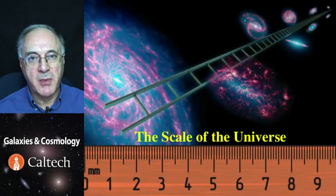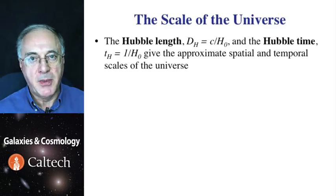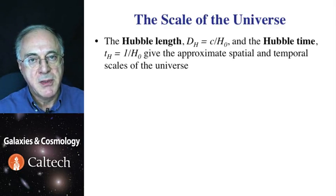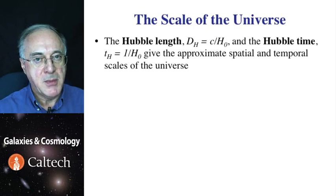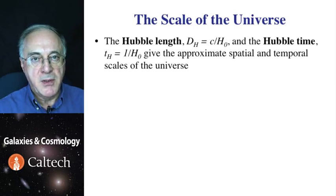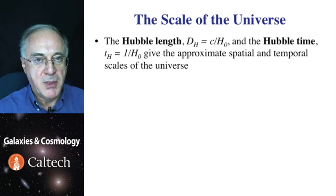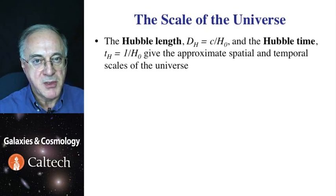We now turn to measurement of cosmological parameters, the first of which is Hubble's constant or Hubble parameter. It sets both the spatial and temporal scales for the whole universe. In a given cosmological model specified by values of different omegas or little w, all distances and all times scale linearly with Hubble's constant. The inverse of the Hubble constant is the characteristic time unit of cosmology — the Hubble time. Multiplied by the speed of light, it gives the Hubble length, which is commensurate with the size of the observable universe.